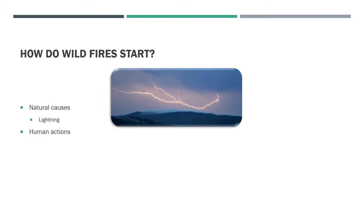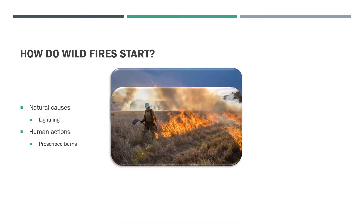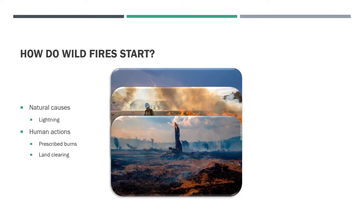The second cause of wildfire is human actions. This cause can be broken up into three main categories: prescribed burns as a forest management tool, land clearing for various uses — primarily for agricultural use or urban development — and general human carelessness.